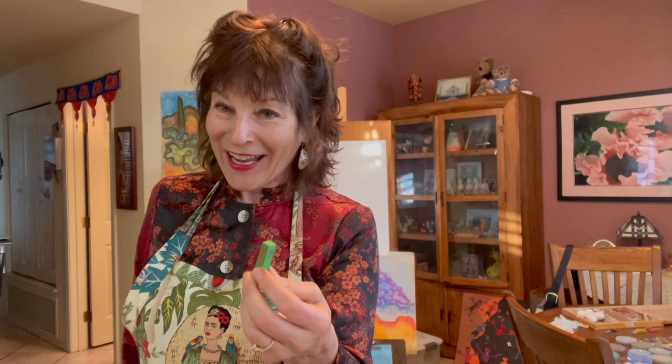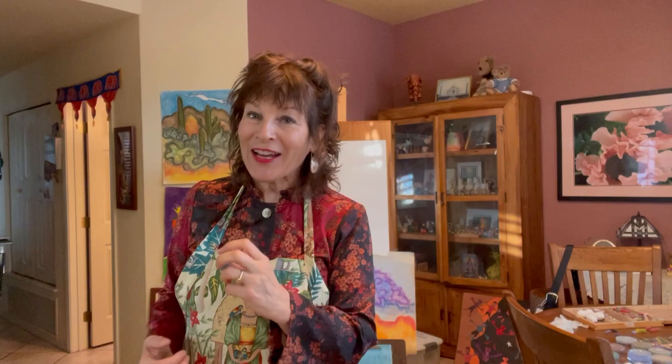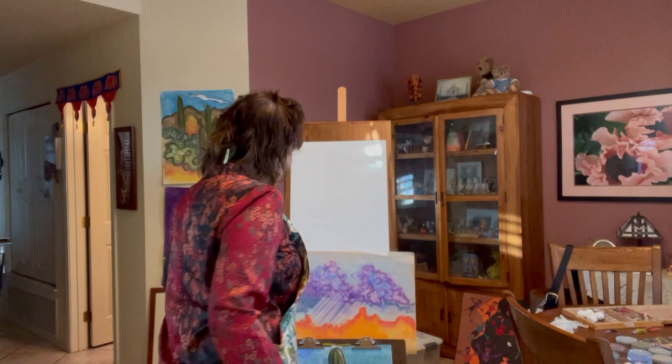I'm going to start by showing you one of my pastels of one of the mountain ranges here in Tucson — Purple Mountain Majesty. This particular tutorial will show you how you divide the paper in threes, so you have the foreground, the middle ground, and the background. I'm going to start out with just drawing the shape of the line of the rough part of the mountains.